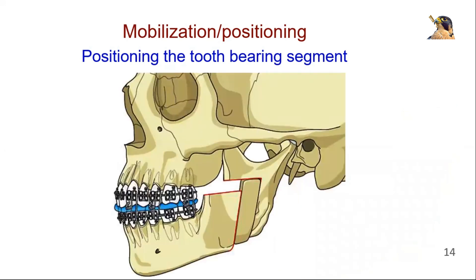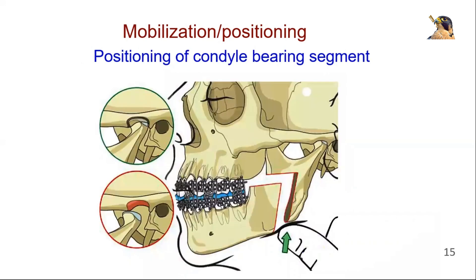For large anterior and inferior movements, a gap will result between the proximal and the distal segment, necessitating the need for bone grafting as shown here. Care must be taken to maintain the normal fossa-condyle relation and to avoid condylar displacement. This is usually achieved by manual repositioning of the condyle-bearing segment superiorly into the glenoid fossa.